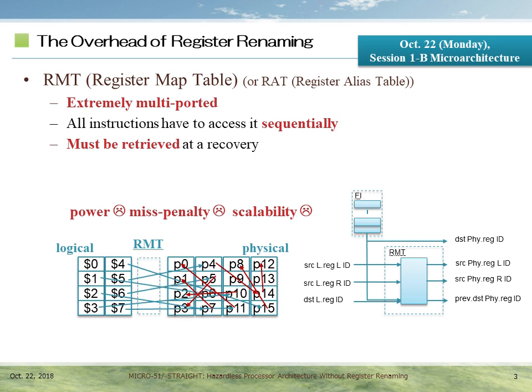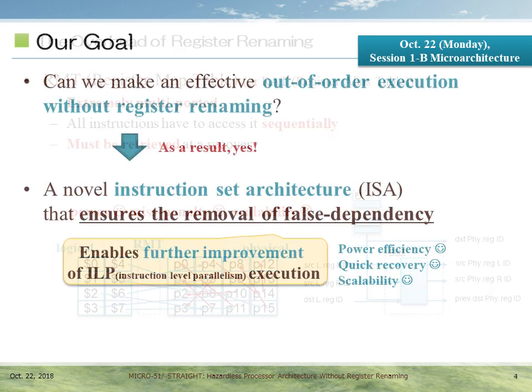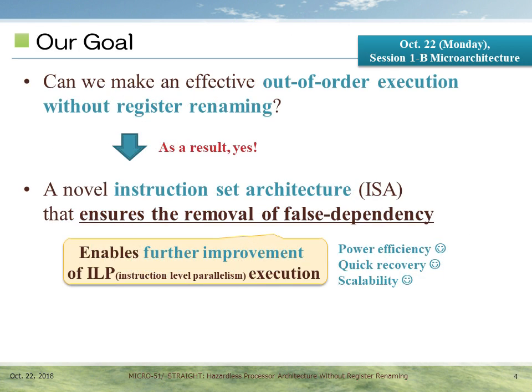Moreover, when a misspeculation occurs, RMT has to be recovered, which requires a number of cycles when the size of the reorder buffer increases. So in this work, our question is: can we make an effective out-of-order execution without register renaming? As a result, we present a novel instruction set architecture that ensures removal of false dependency.